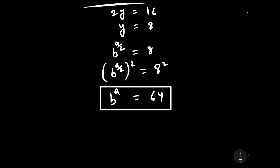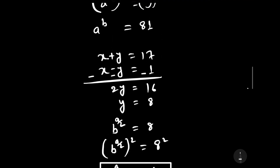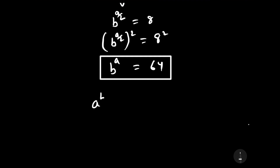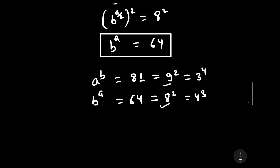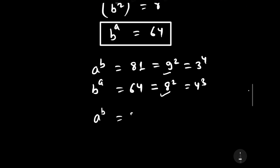Now we have two values: a to the power b is equal to 81, and b to the power a is equal to 64. We can see that 81 can be written as 9 squared or 3 to the power 4, and 64 can be written as 4 to the power 3. We will consider a to the power b equal to 3 to the power 4 and b to the power a equal to 4 to the power 3.